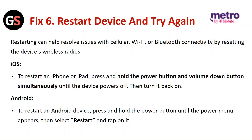Fix 6: Restart the device and try again. Restarting can help resolve issues with cellular, Wi-Fi, or Bluetooth connectivity by resetting the device's wireless radio. For iOS, press and hold the power button and the volume down button simultaneously until the device powers off, then turn it back on.